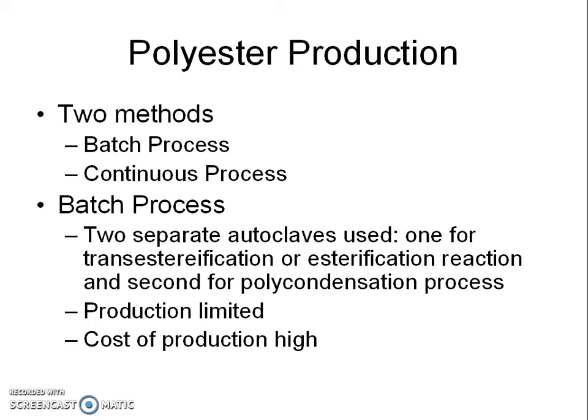Polyester is produced in industries by two methods: batch process and continuous process. In the batch process, two separate autoclaves are used — one for transesterification or esterification reaction, and a second for polycondensation. The production is limited and the cost of production is also high. In this tutorial, we will be covering only the continuous process.